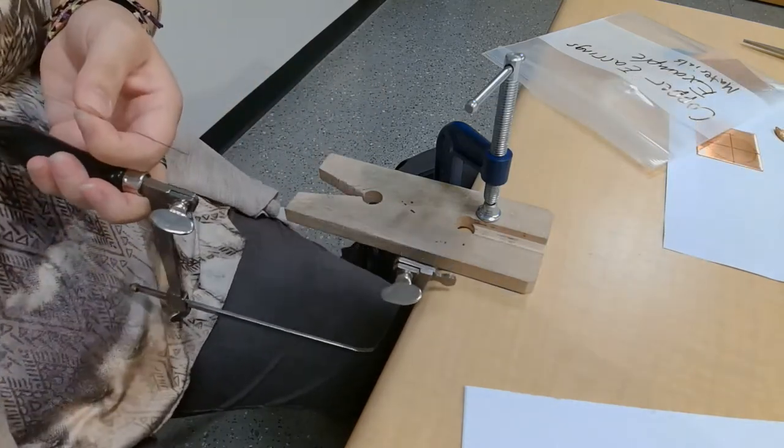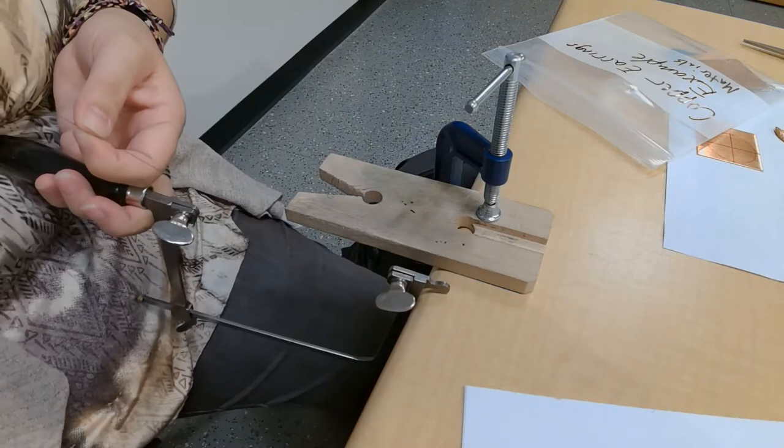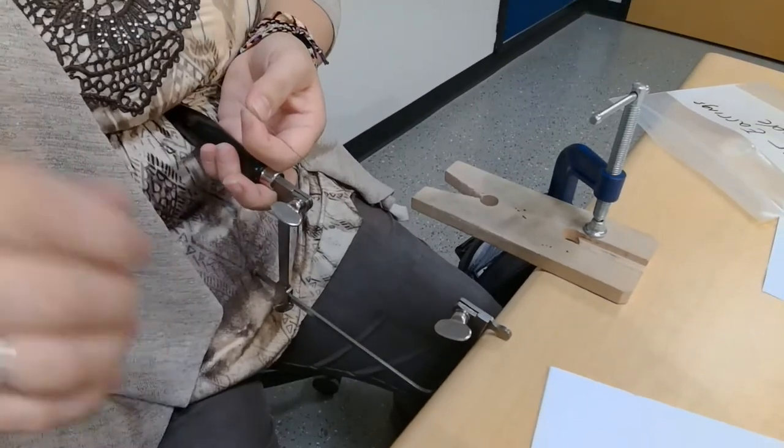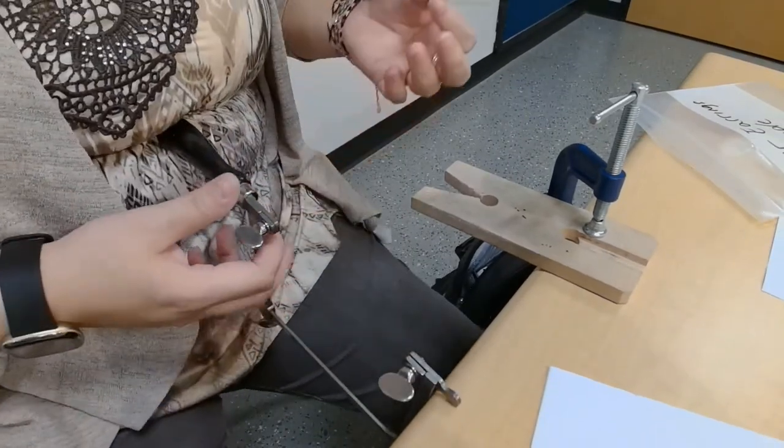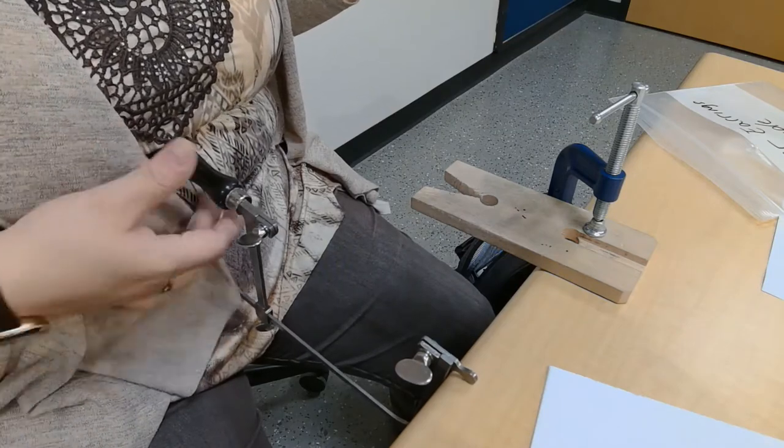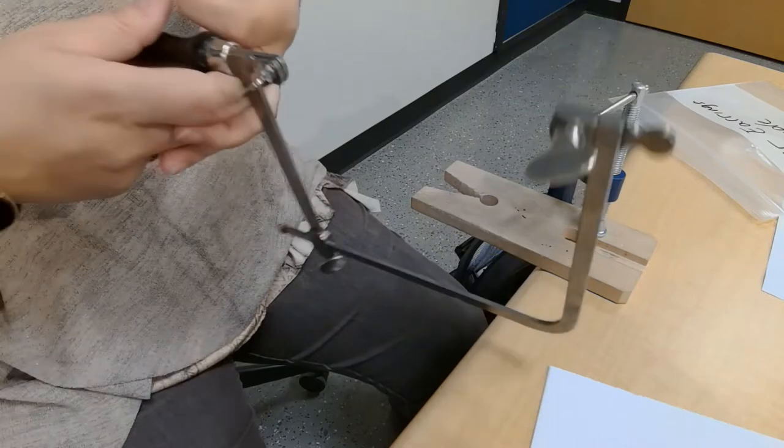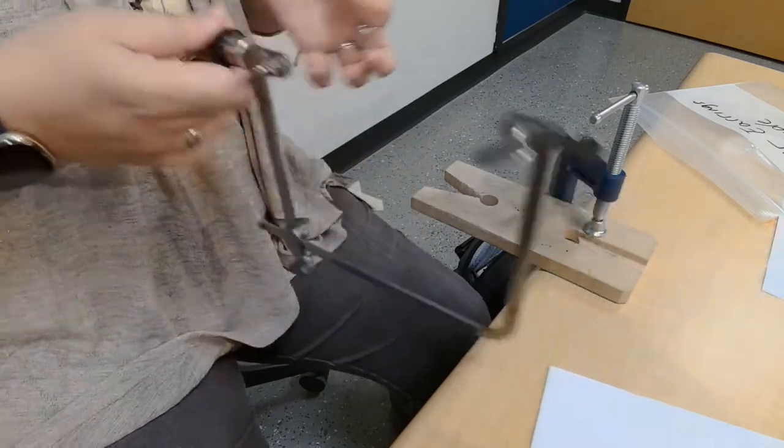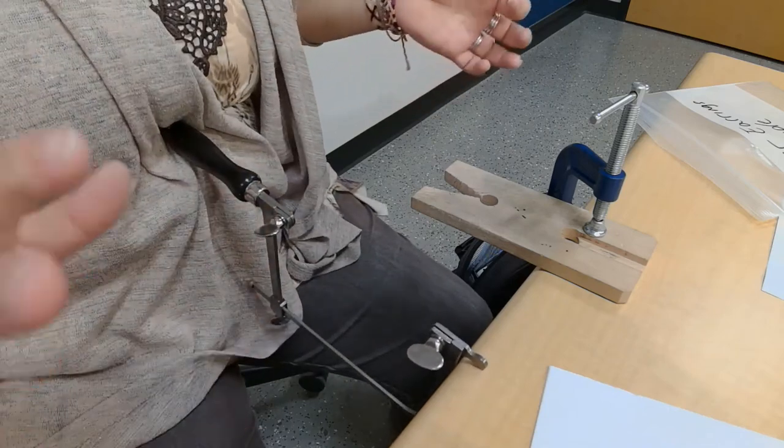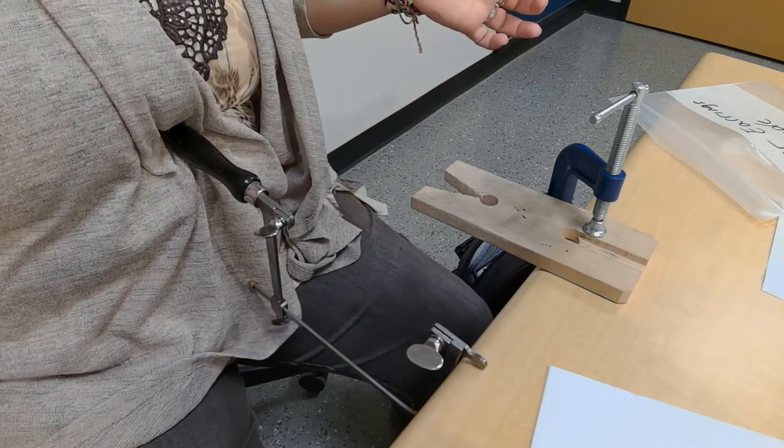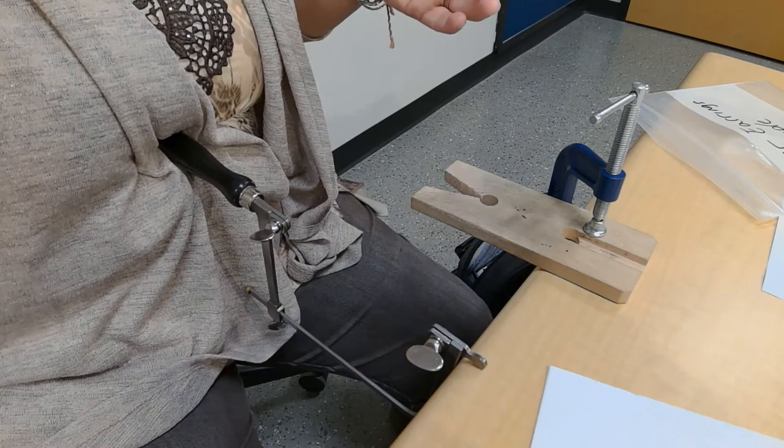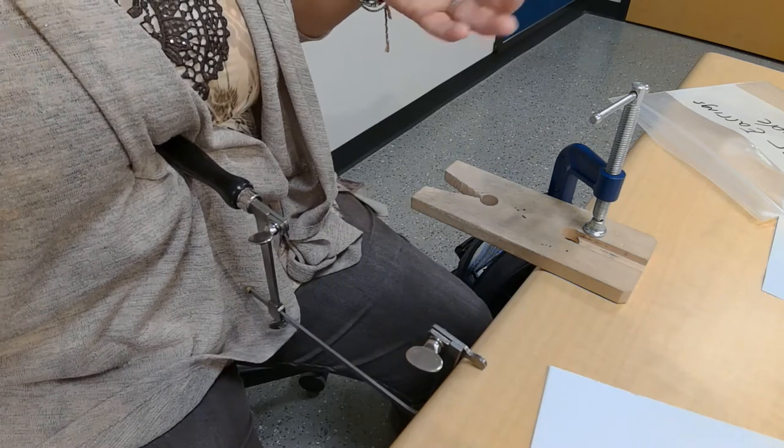Now, to put them in the jeweler's saw. I put it against the table so I have both of my hands. This is not the right shirt to be wearing today, but hopefully you'll be able to see. I lean it up against the table and I put it at my belly to hold it, so I can be working with both of my hands without it moving around.